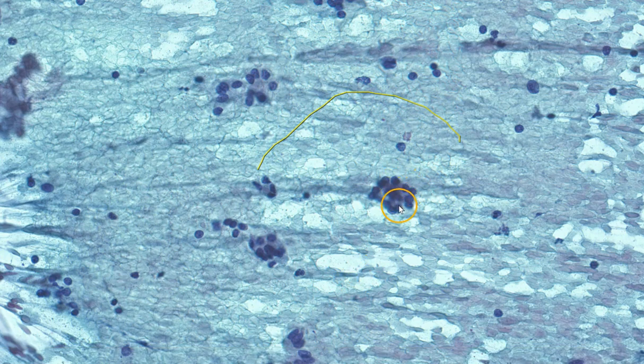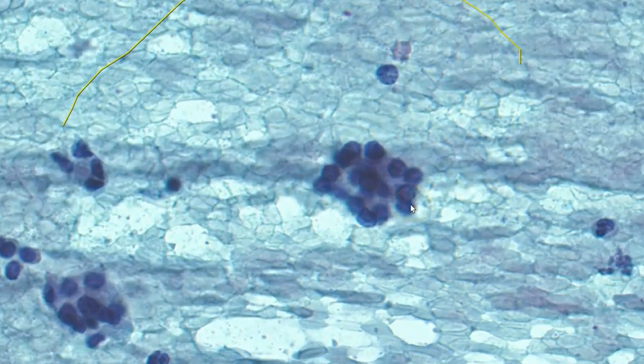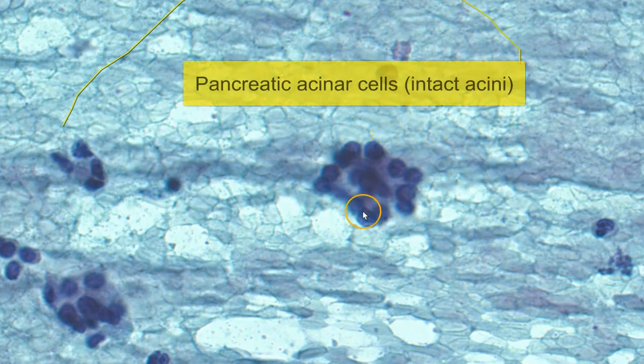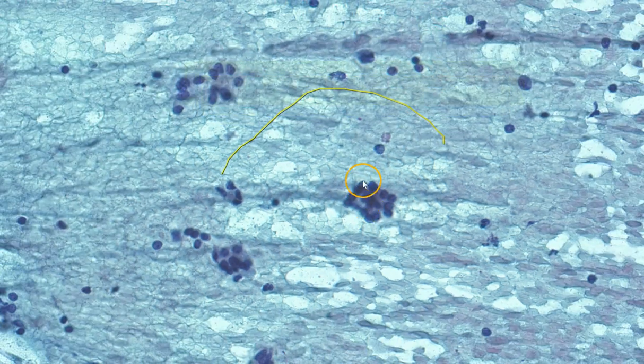These very small uniform cells with eccentric round nuclei, arranged in small acinar patterns, actually represent pancreatic acinar cells. We can sometimes see them in little isolated rounded groups, or sometimes in large tissue fragments embedded within the stroma.